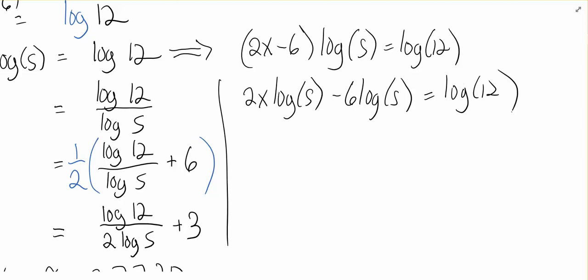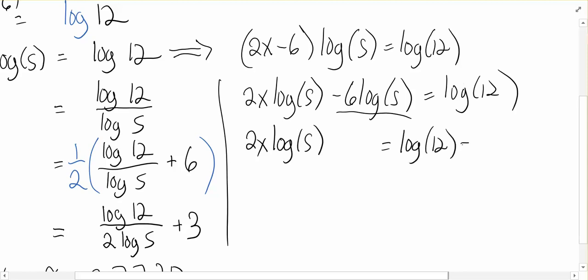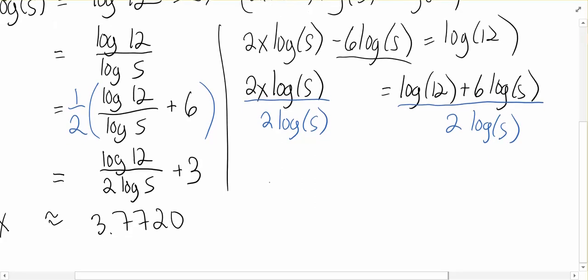Now to solve for x, remember that's our goal is to solve for x. We've got this value that I've just underlined that has no x's in it. So that's the first thing that we would add to the other side. That would get us log 12 plus 6 log 5. And then to get the x by itself, we divide by everything that isn't the x, which would be 2 log 5. And so this gets us an answer of log 12 plus 6 log 5 all over 2 log 5.